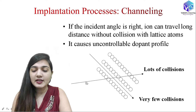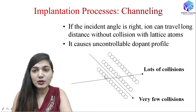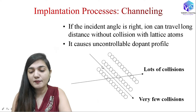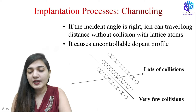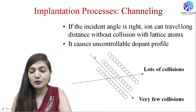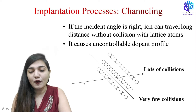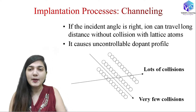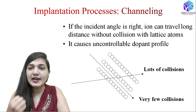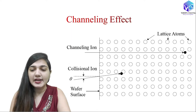If the ion is coming from the first direction, there will be a lot of collisions with the nucleus. But if the ion is coming from the second direction, there will be no significant nuclear stopping — only electronic stopping — and we have very few collisions in this case. So in that case we have an uncontrolled dopant profile because the dopant atom is reaching very deep inside the wafer surface. I hope now you understand what the channeling effect is.